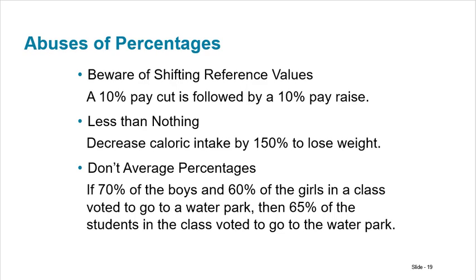Now some abuses — times when percentages get misinterpreted. Beware of shifting reference values. A 10% pay cut followed by a 10% pay raise doesn't get you back to where you started, because you're calculating 10% of different things. If you start earning $100 an hour and take a 10% pay cut, you're now at $90. Then a 10% raise gives you 10% of $90, which is only $9 — you go up to $99, not $100. Percent changes in different directions never equal each other.